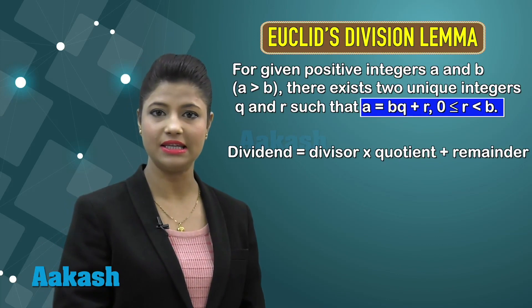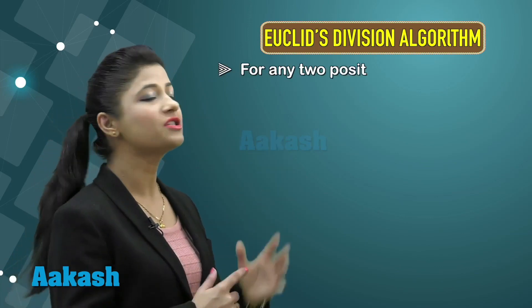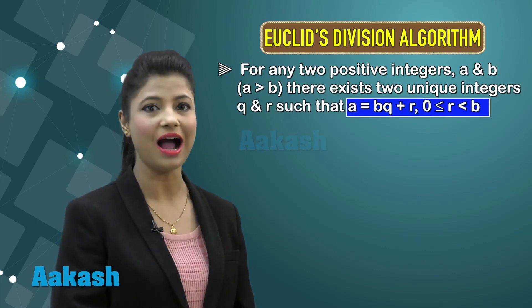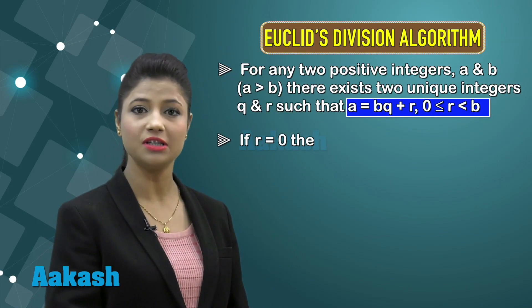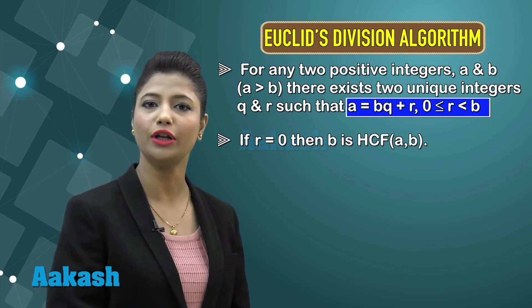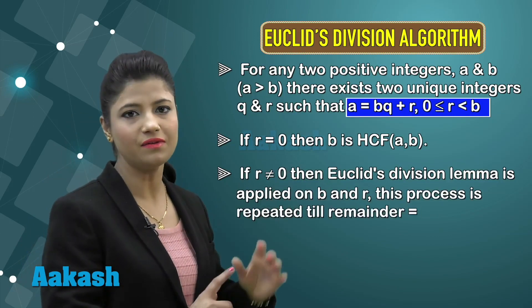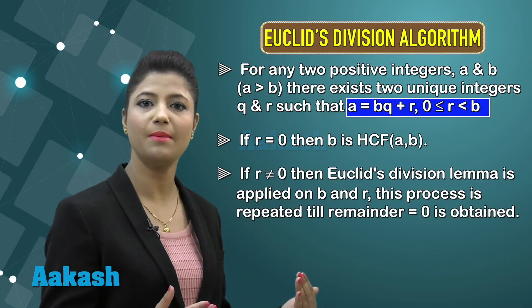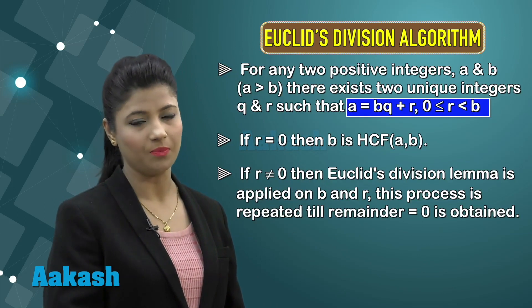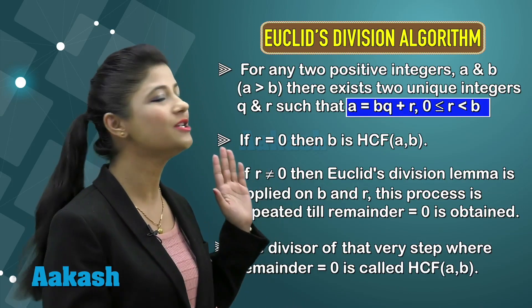Euclid's division lemma is used to compute HCF, and that process is called Euclid's division algorithm. For any two positive integers a and b, you apply the lemma to get a = bq + r. If the remainder equals 0, then the divisor of that step is the HCF. If the remainder is not equal to 0, you take the divisor B and remainder R and apply Euclid's division lemma on them again. This continues until the remainder equals 0, at which point the divisor of that step is the HCF of the given two numbers a and b.